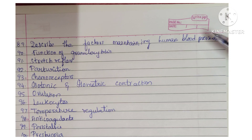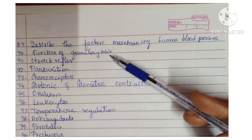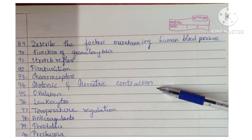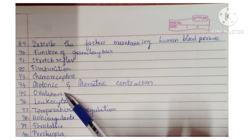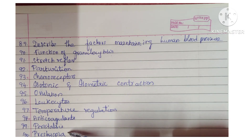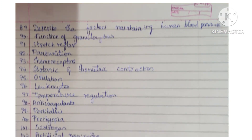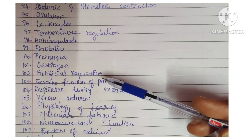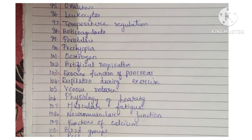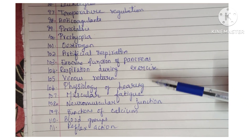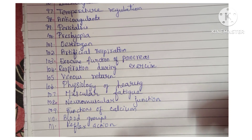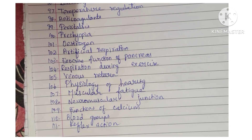Final physiology topics: factors maintaining human blood pressure, functions of granulocytes, stretch reflex, parturition, chemoreceptors, isotonic and isometric contraction, ovulation, leukocytes, temperature regulation, anticoagulants, peristalsis, presbyopia, estrogen, artificial respiration, exocrine function of pancreas, respiration during exercise, venous return, physiology of hearing, muscular fatigue, neuromuscular junction, functions of calcium, and blood groups and reflex action.